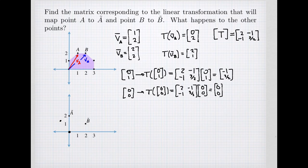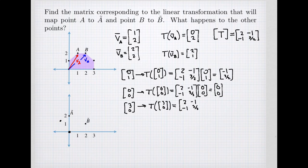Our next point is at (3,0). The point (3,0) gets sent to an image T(3,0), which is 3 times the first column of our standard matrix. Using matrix [[2,-1],[-1,3/2]] times (3,0), we get 3 copies of the first column: that's (6,-3). So that point maps out to (6,-3) on the graph — at x=6, y=-3.